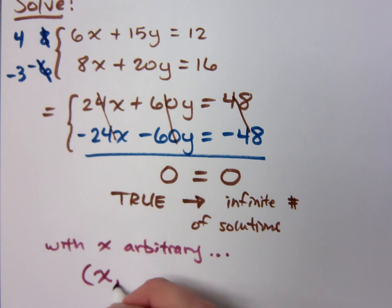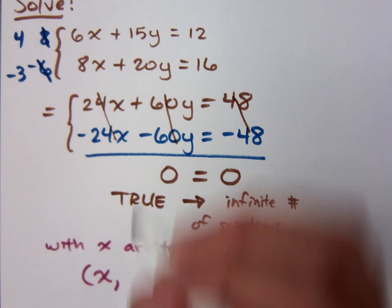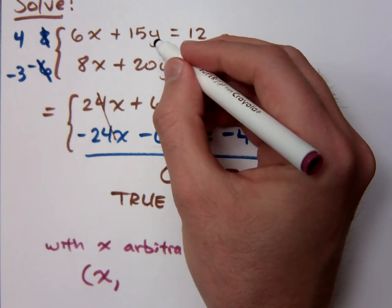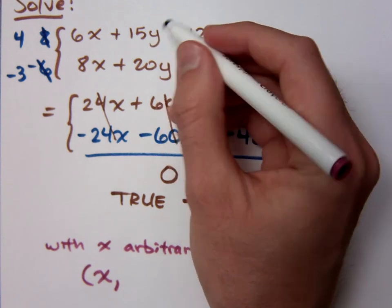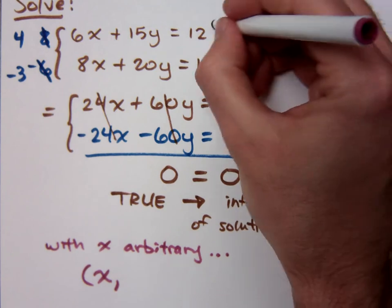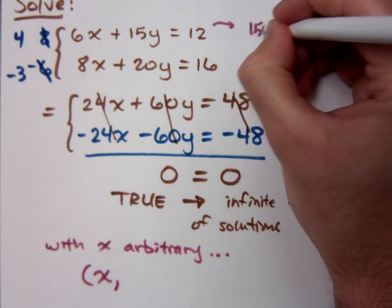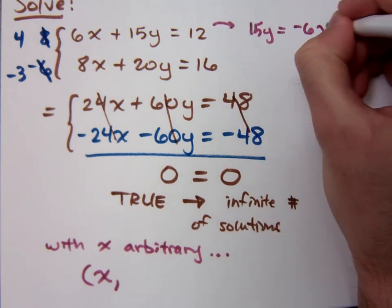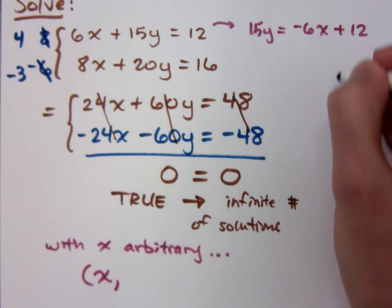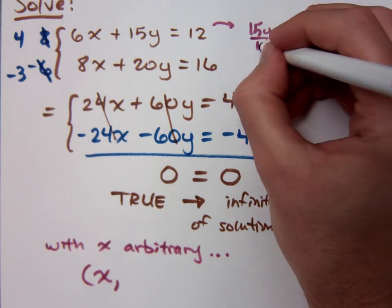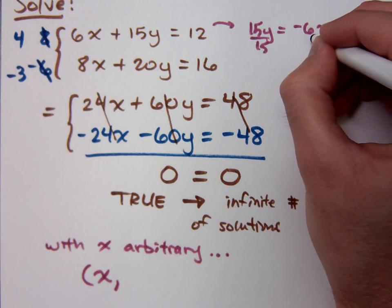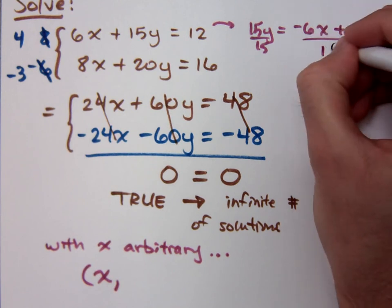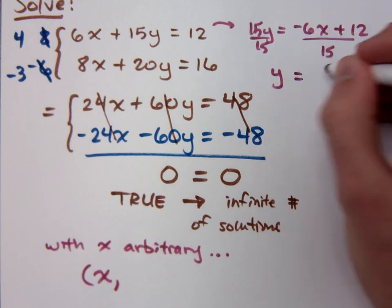It's going to be x comma something based on x. So basically what you need to do is to solve one of these guys for y. Okay. If I solve this for y, that means 15y equals negative 6x plus 12, divide by 15, and reduce this guy.